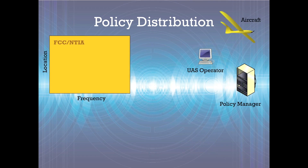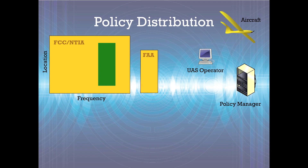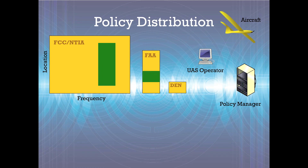In this example, a policy for 10 MHz of spectrum across the U.S. is given by NTIA to the FAA. The FAA, in turn, gives a 10 MHz sub-policy to the Denver Airport for use around the airport. Denver Airport, in turn, gives a 1 MHz band of spectrum for an unmanned aircraft system to use during takeoff.